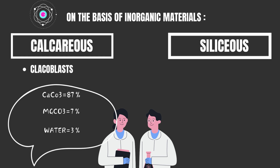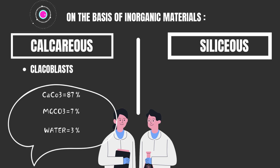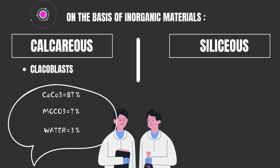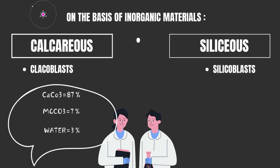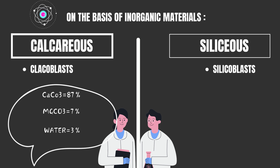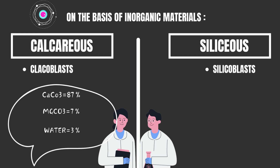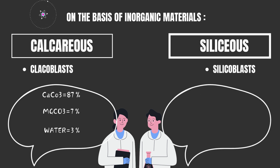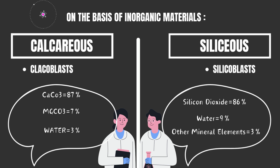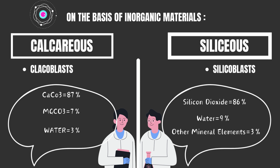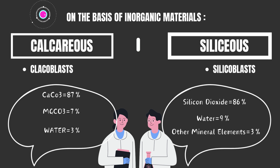Each calcareous spicule also has an axial thread of organic material known as the spicule. The second type, on the basis of inorganic material, is the siliceous spicule. In these spicules the inorganic cover is formed of silicic acids. These are secreted by scleroblasts of mesoglia and are found in members of class Hexactinellida and Demospongiae. Chemically, each siliceous spicule is formed of silicon dioxide 86%, water 9%, and other mineral elements such as sodium, potassium, iron, and chlorine making up 3%, plus an axial thread of organic material.